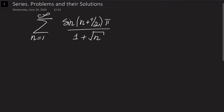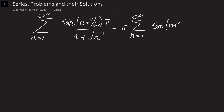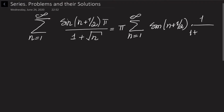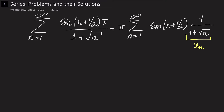In our case, I am going to take out pi from the brackets, so it is going to be pi times the sum from n equals 1 to infinity of sine of (n + 1/2) times 1 over (1 + √n). This part, 1 over (1 + √n), is going to be aN, and sine of (n + 1/2) is going to be bN.